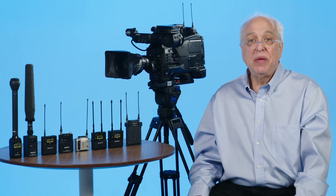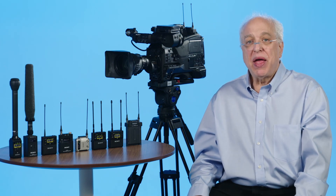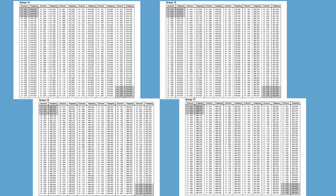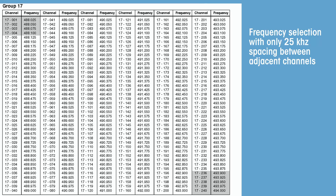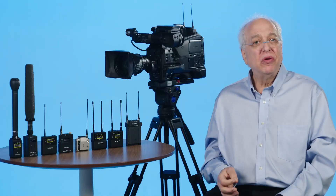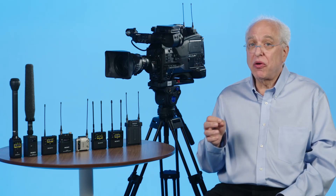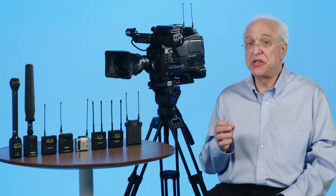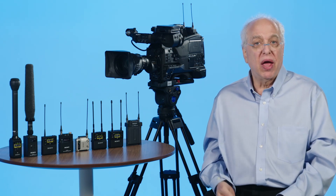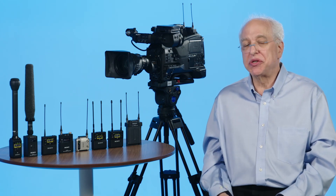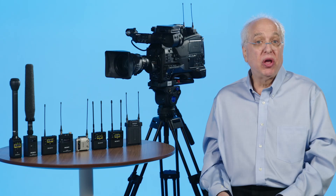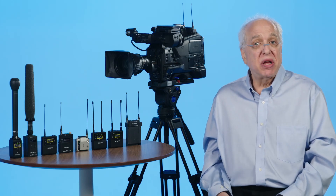If you keep scrolling through the available groups, you'll notice it continues past group 9, and in this band choice offers groups 14, 15, 16, and 17 as well. These higher groups offer frequency selection with only 25 kHz spacing between adjacent channels — not 125 kHz — and offer up to 231 assignable frequencies within a particular TV channel. You might want to use these groups if you need to be compatible with another manufacturer's wireless system, or if you are assigned a specific frequency by an RF coordinator at a large venue. You can select this group, manually go to that specific frequency, and sync up your transmitter to match.